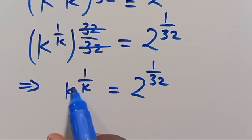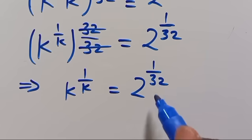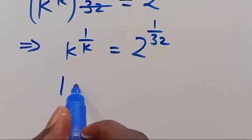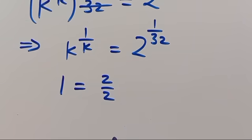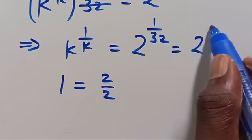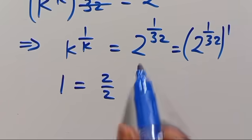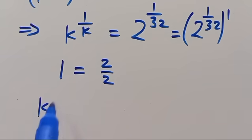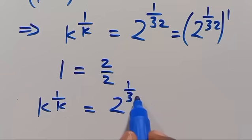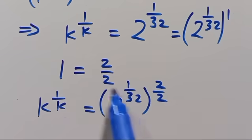So from here, this has a similar look but it's not the same. So to make sure that we have matching forms, let's do some logical expression. Mind you, 1 can be simplified as 2 divided by 2. So we can also have this expression again as 2 to the power of 1 divided by 32, in parentheses to the power of 2 divided by 2, because 2 divided by 2 equals 1.